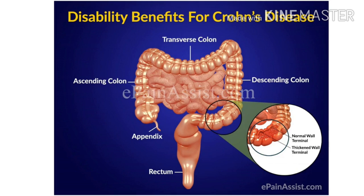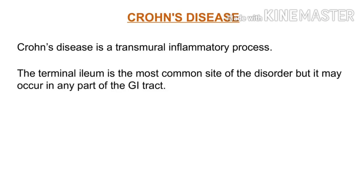In this diagram, we can see there is a thick wall. If we see Crohn's disease, we can see how there is a thick wall. The structure is clear. The colon wall is very thick. The Crohn's disease is a transmural inflammatory process. This is the most common site — the ileum. It can affect any part of the GI tract.